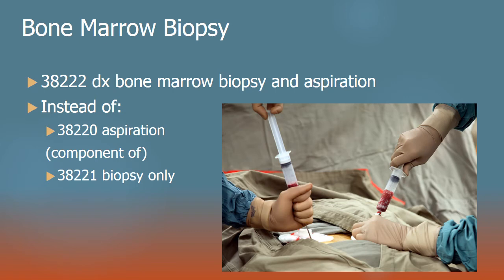Revisiting bone marrow for a moment — biopsies. There's an instance CPT clears up that's always been a thorn in my side when coding bone marrow biopsies when an aspiration is also done to work up myelodysplastic syndromes and leukemias. Previously, 38221 was for biopsy and the aspiration was a free component. CPT has now given us combination code 38222, where the bone marrow biopsy and aspiration are done at once. In reality, these are almost always done through the same needle with just a slightly different approach.